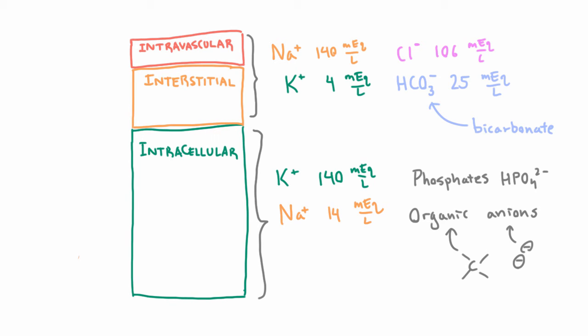And the cell membrane is mostly impermeable to all these electrolytes. But what can pass easily between the intracellular and extracellular compartments is water.